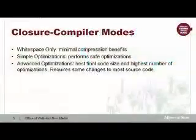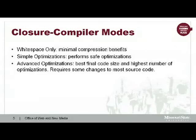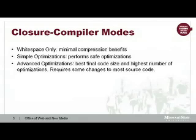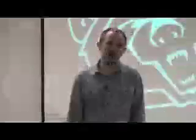Closure Compiler works in several different modes. The first is whitespace only, which is kind of a toy — it's not that hard to remove your own whitespace and you don't get many benefits. Where the benefits really start to come into play are with simple optimizations, which performs a set of relatively safe optimizations on your code. Advanced optimizations give you the best code size and highest number of optimizations, but typically require changes to your source code to correctly compile. There are some pretty big assumptions the compiler makes that you've got to account for.